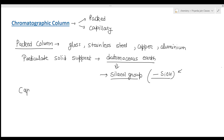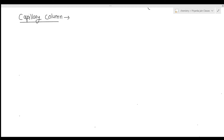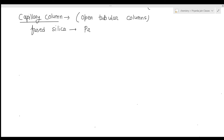The second type of column is the capillary column, also known as the open tubular column. These are constructed from fused silica coated on a protective polymer. Capillary columns are of two types: wall-coated and support-coated.